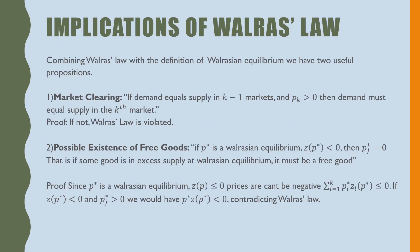Combining Walras's Law with the definition of Walrasian equilibrium, we have two useful propositions. The first one is the market clearing proposition: if demand equals supply in the K minus one markets and the price in the Kth market is greater than zero, then demand must equal supply in the Kth market. What's the proof for this? If not, Walras's Law is violated. That's it.